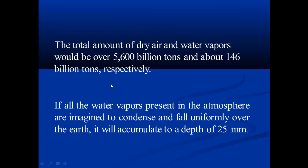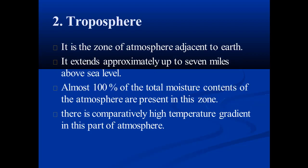The total amount of dry air and water vapors in the atmosphere is around 5,600 billion tons, while water vapors alone are about 146 billion tons. If all the water vapors present in the atmosphere were to condense at the same time and fall uniformly over the entire surface, they would accumulate to a depth of 25 mm.